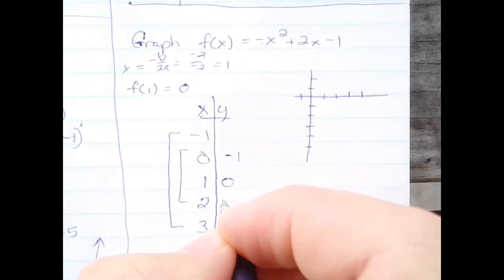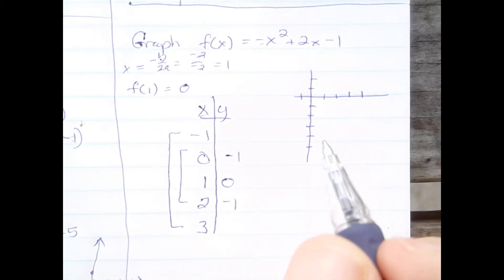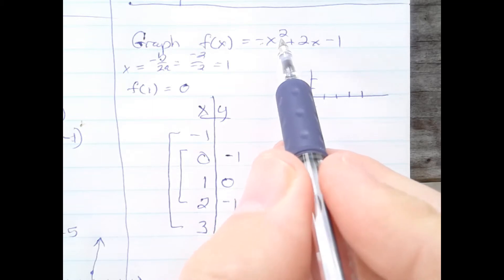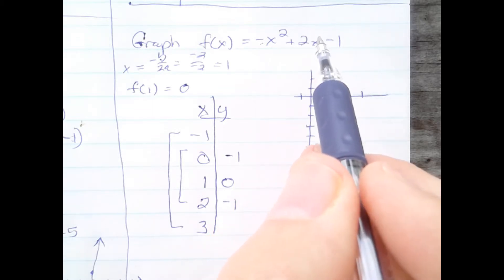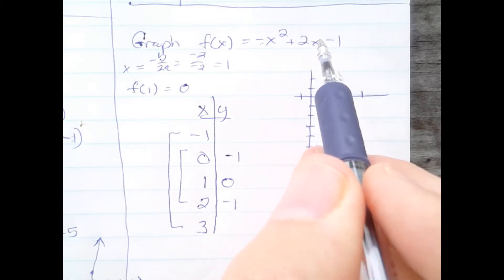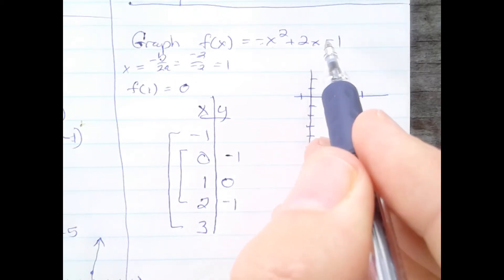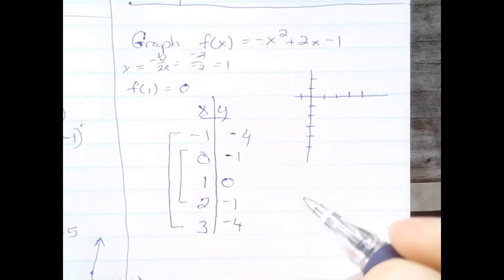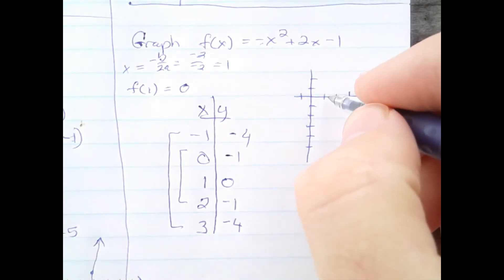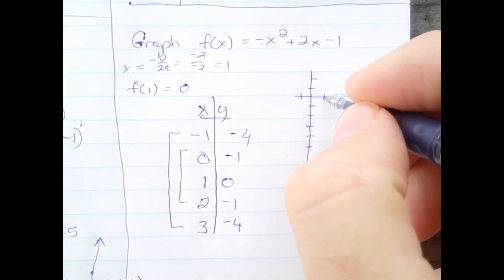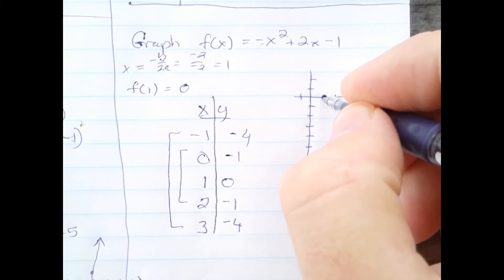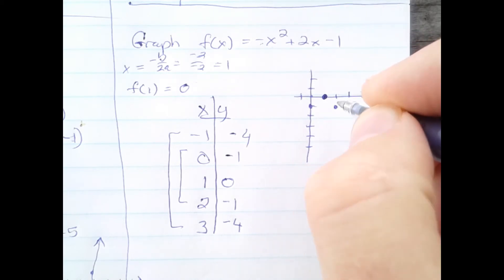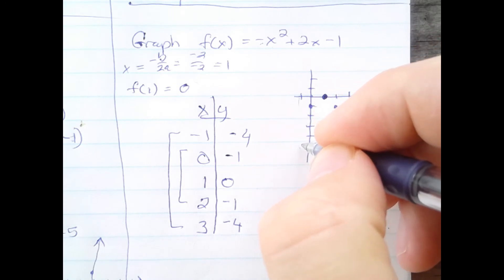If I plug in negative 1 to the function, negative 1 squared is 1, negative 1 minus 2 would be negative 3, and negative 3 minus 1 would be negative 4. So here are my 5 coordinates now that I can plot: (1, 0), (0, -1), (2, -1), (-1, -4), and (3, -4).